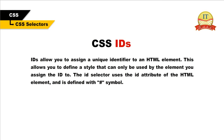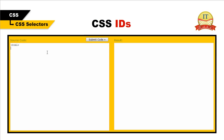CSS IDs. IDs allow you to assign a unique identifier to an HTML element. This allows you to define a style that can only be used by the element you assign the ID to. The ID selector uses the ID attribute of the HTML element and is defined with the hash symbol. For example, as shown in the following code, the style rule below will be applied to the element with ID para1.